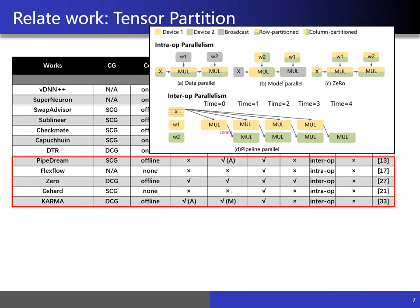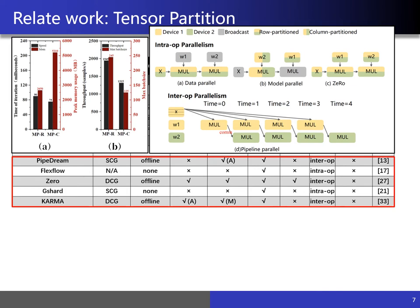Tensor partition is another technique to split the model parameters into different devices. The intermediate tensors will also be split into different devices for the purpose of training large models. Tensor partition mainly includes data parallelism, model parallelism, and pipeline parallelism. Tensor partition introduces a large number of communication operations, and different partition methods have different impact on the memory footprint. As shown in the figure, for an MLP network, the final total throughput is different for model parallelism with row partition and column partition respectively, while existing work only considers the communication overhead and ignores the impact of memory on overall performance.